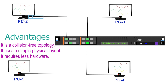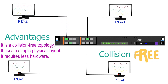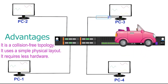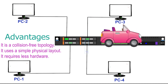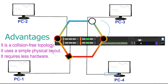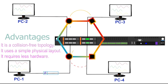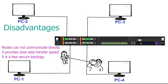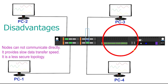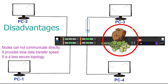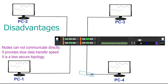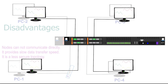The main advantage of this topology is that it is free from collision, since only one device can send data at a time. A simple layout and fewer hardware requirements are other notable advantages. On the negative side, it does not allow devices to communicate directly. All communication goes through all devices in the ring, causing slow data transfer speed and a security threat. Like bus topology, this topology is also outdated and no longer used in modern networks.